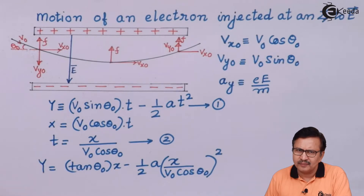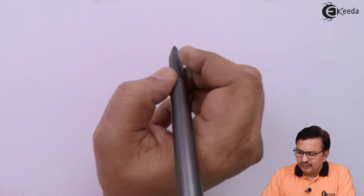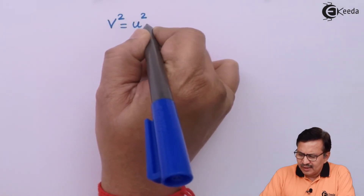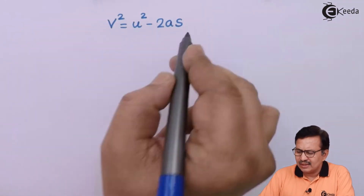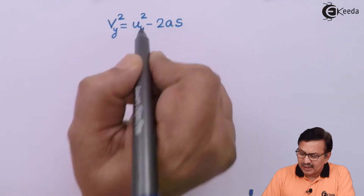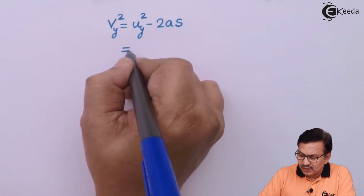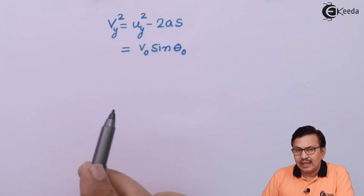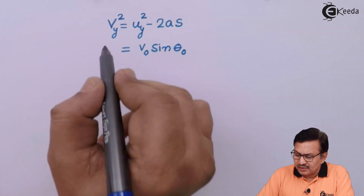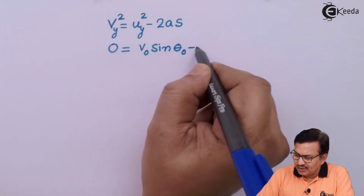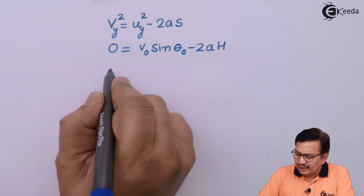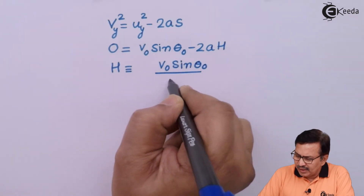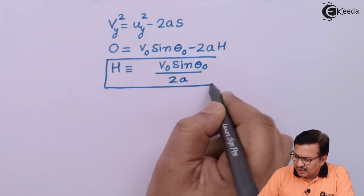To find the maximum displacement h in the y-direction, we use the formula v² = u² − 2a·s, where s is the height. The initial velocity in the y-direction is v0 sin(theta0) and the final velocity is zero at maximum height. Solving for h gives h = (v0 sin(theta0))² / (2a).